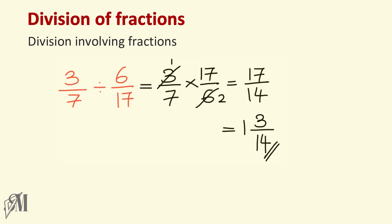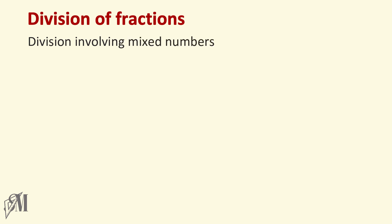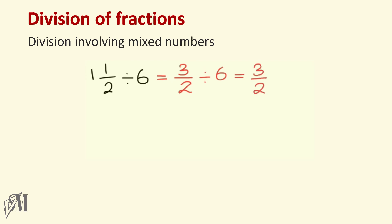The final section involves division of mixed numbers. Here, one and a half is to be divided by six. The first step is to convert mixed numbers into improper fractions: one and a half equals three over two. So we have three over two divided by six. Write three over two as it is, convert division to multiplication, and the reciprocal of six is one over six. Three and six cancel, giving us one over four.